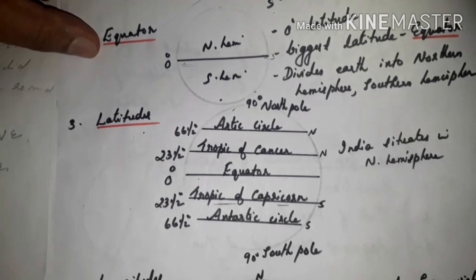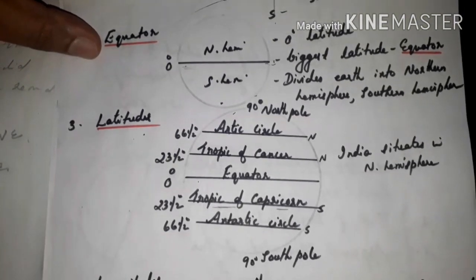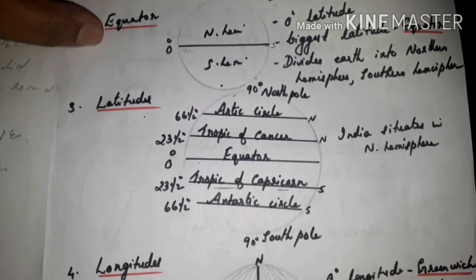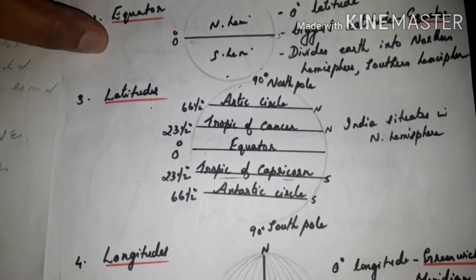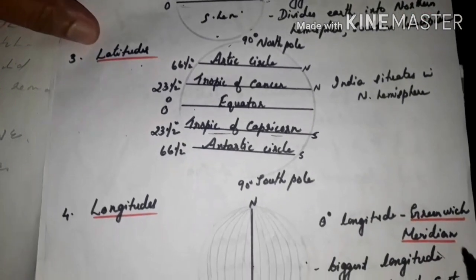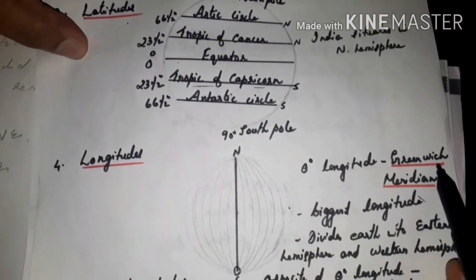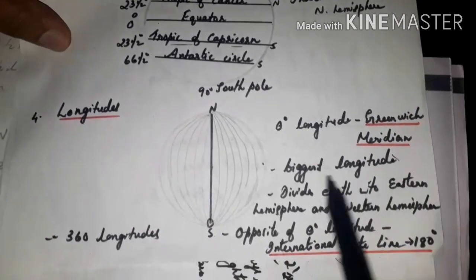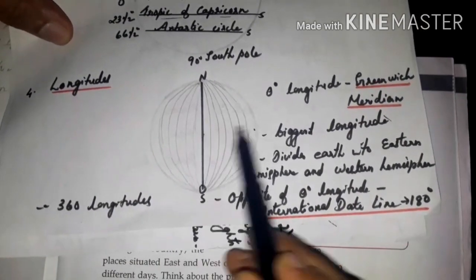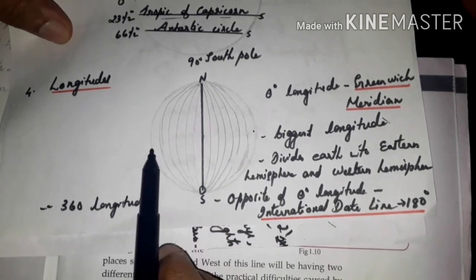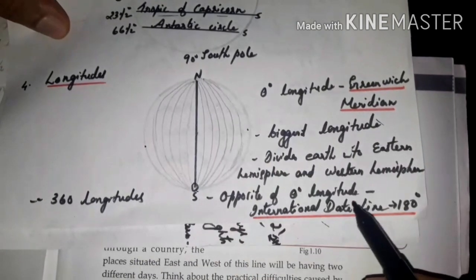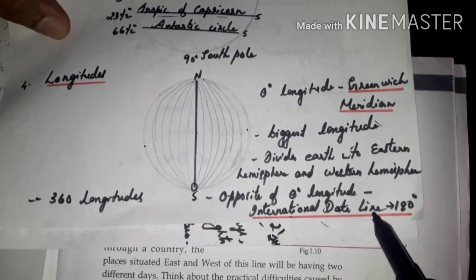Next, longitudes. Longitudes are the lines drawn from north to south, north pole and south pole. This is the zero degree longitude. The zero degree longitude is known as Greenwich Meridian. This is the biggest longitude. It divides Earth into eastern hemisphere and western hemisphere. Opposite of this zero degree longitude is known as International Date Line. It is 180 degree.